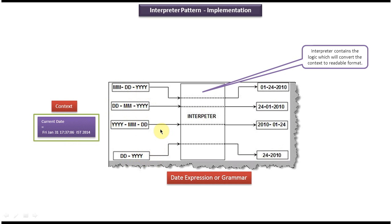Suppose if you want to convert date to a specific expression or format, then you have to pass this expression to the interpreter along with the context. So what this interpreter will do is it will take date from the context and convert it to the specific format using the expression. So you can see the output — month-date-year, date-month-year, year-month-date, and date-year. So the interpreter has the logic which takes data from the context, interprets it, and produces output which the user can read properly.